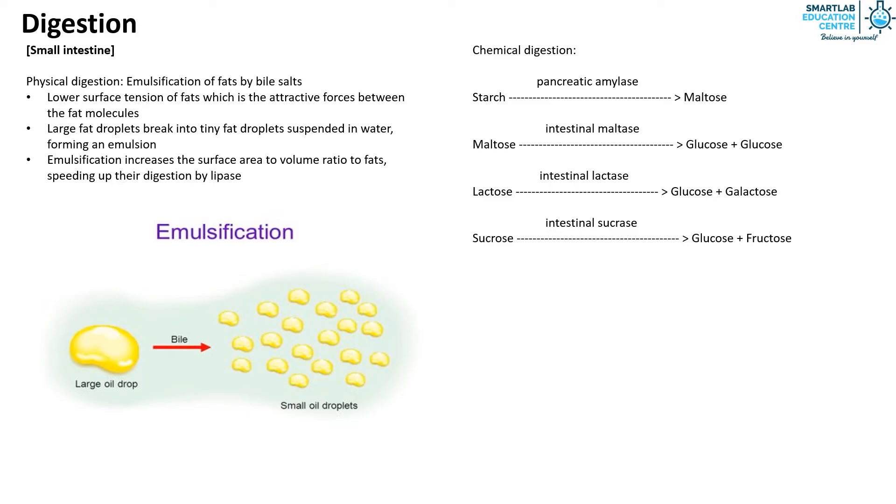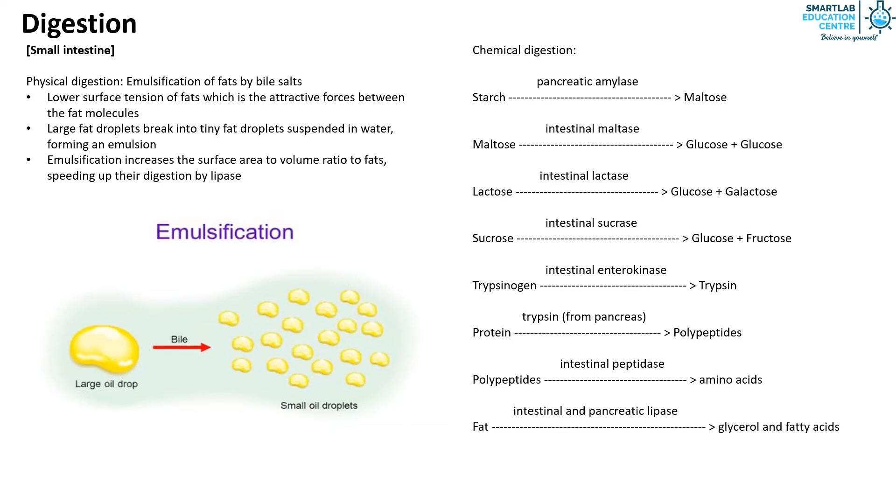Trypsinogen is converted to trypsin by intestinal enterokinase. This trypsin, which originated from the pancreas, then hydrolyzes protein into polypeptides. The polypeptides are then hydrolyzed into amino acids by intestinal peptidase. Lastly, fats are hydrolyzed into glycerol and fatty acids by intestinal and pancreatic lipase.